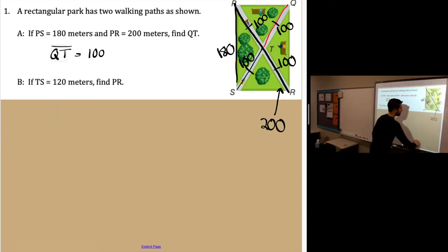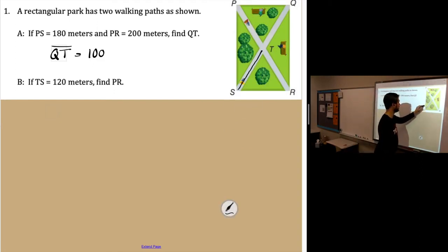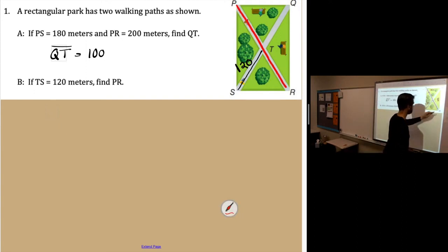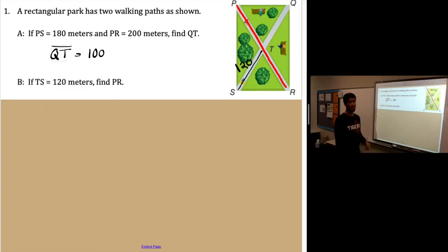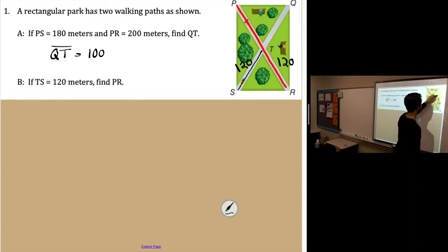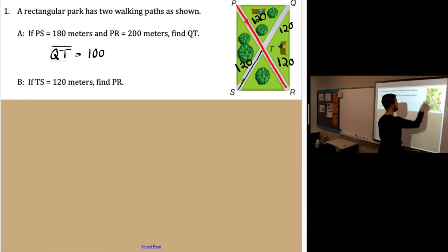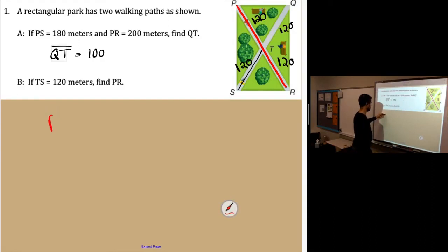Part B: new information. If TS is 120, find PR. Using that same information — diagonals bisect each other and are congruent — all four pieces are congruent. So TS is 120, RT is 120, QT is 120, and the fourth piece is 120. All four parts of the diagonal are 120. Since half of PR is 120 and the other half is 120, PR equals 240.